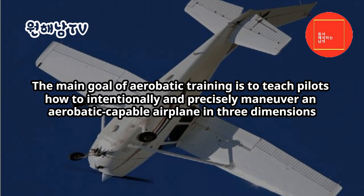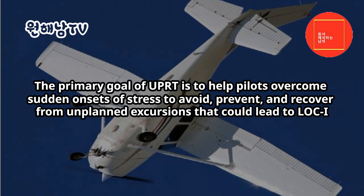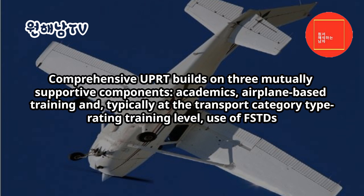The main goal of aerobatic training is to teach pilots how to intentionally and precisely maneuver an aerobatic-capable airplane in three dimensions. The primary goal of UPRT is to help pilots overcome sudden onsets of stress to avoid, prevent, and recover from unplanned excursions that could lead to LOC-I. Comprehensive UPRT builds on three mutually supportive components: academics, airplane-based training, and — typically at the transport category type rating training level — use of FSTDs.